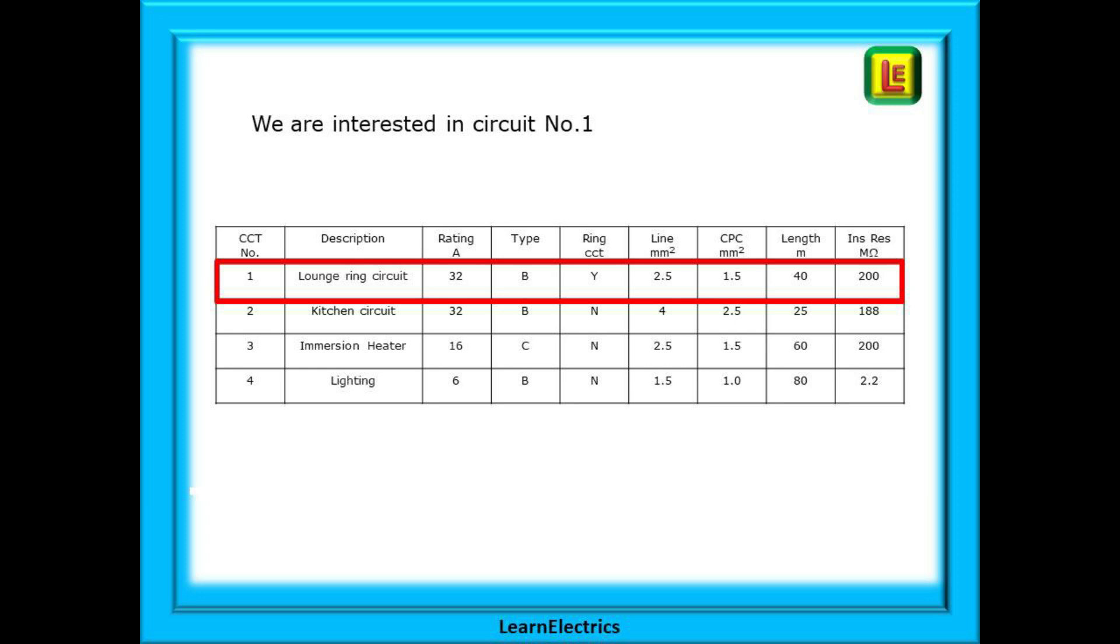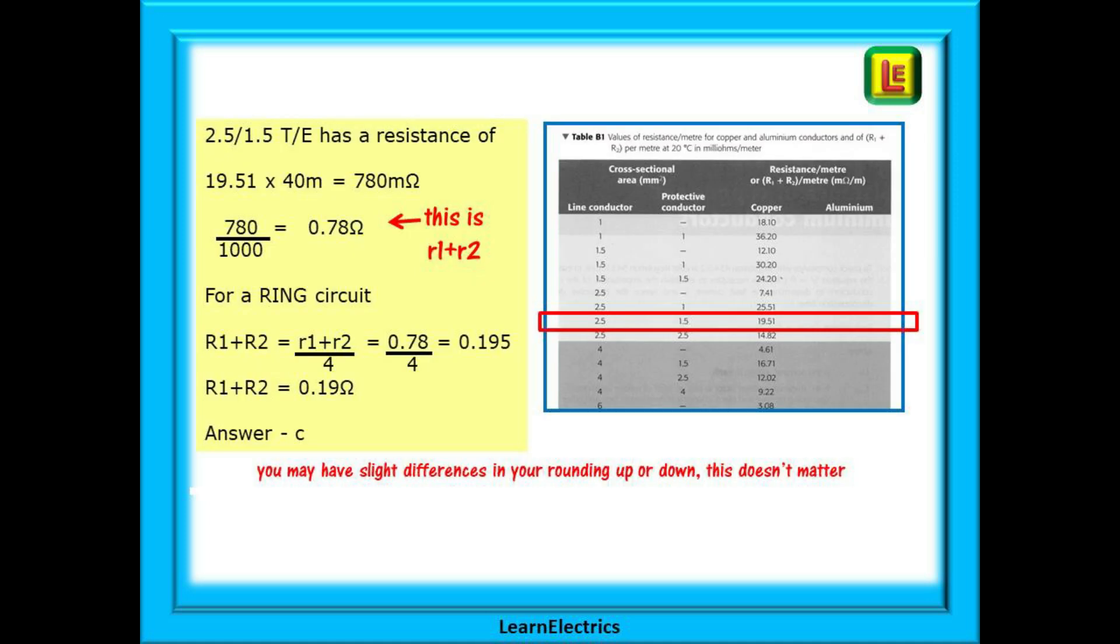We are interested in the data for circuit number 1 as highlighted here. Notice that this is a ring circuit, very important when calculating R1 plus R2. 2.5 1.5 twin than earth has a resistance of 19.51 milliohms per meter. Multiply this by the circuit length of 40 meters and we have 780 milliohms. Now divide by 1000 to arrive at 0.78 ohms. This is not the answer. To find R1 plus R2 for a ring circuit we must divide this number by 4. 0.78 divided by 4 is 0.195 ohms which can be rounded to 0.19 ohms. Don't worry too much about small inaccuracies in rounding. The correct answer will still be fairly obvious.